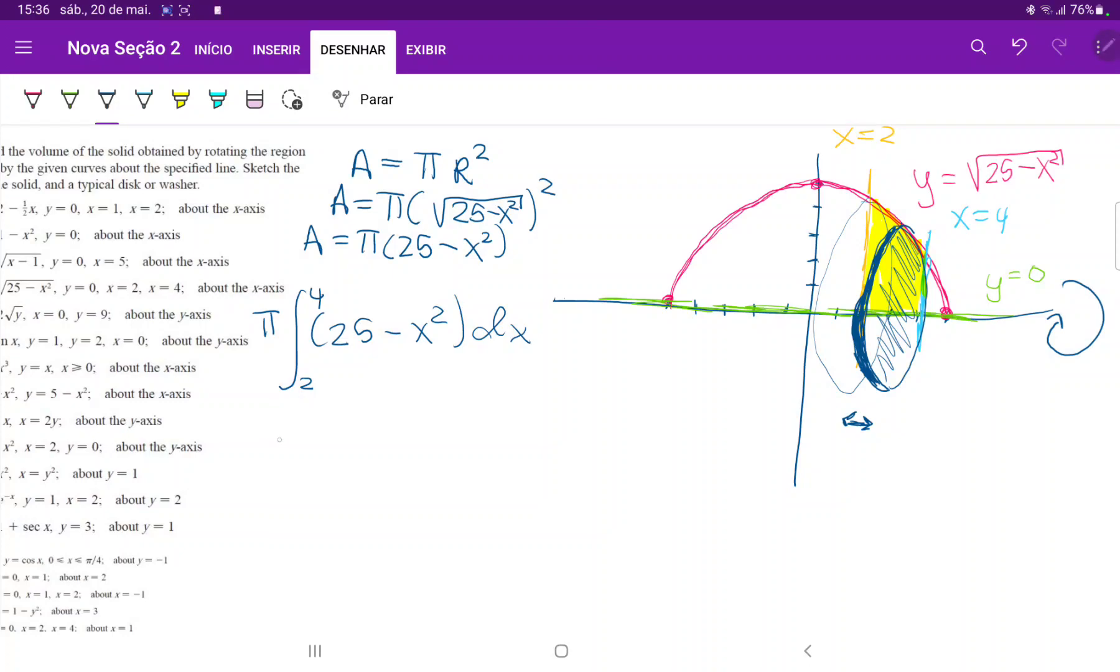So now we're ready to integrate. When we integrate this, this is pi times 25x minus x cubed over 3 from 2 to 4. So all we need to do is plug in our boundaries.